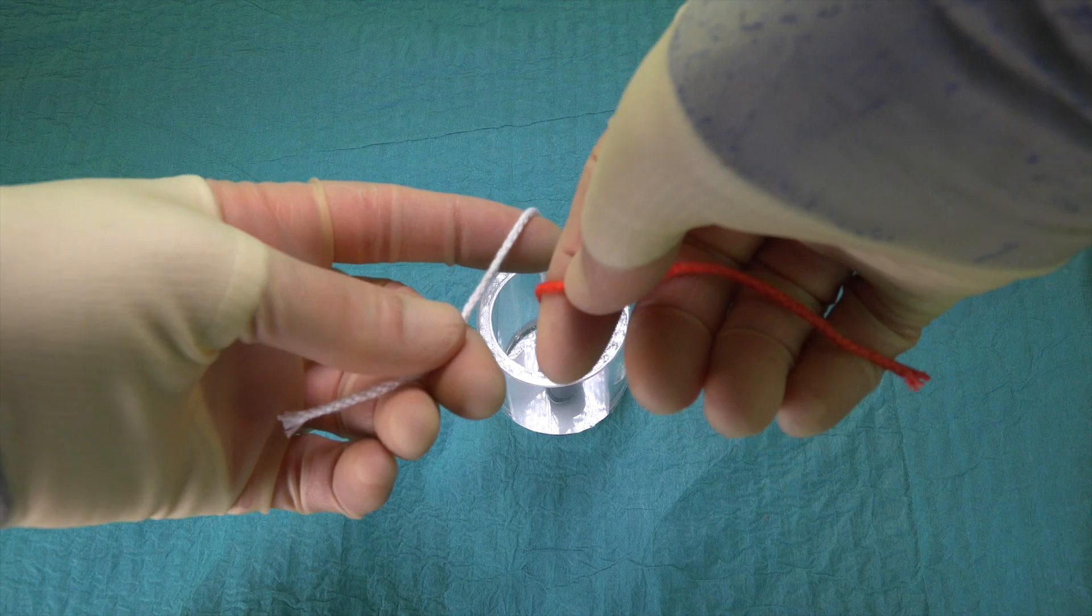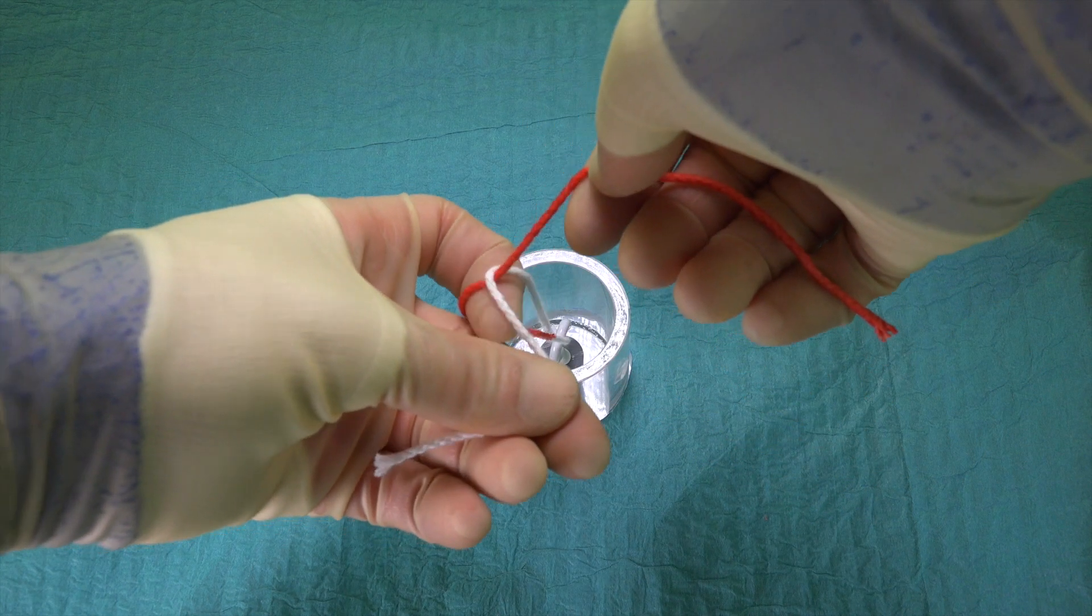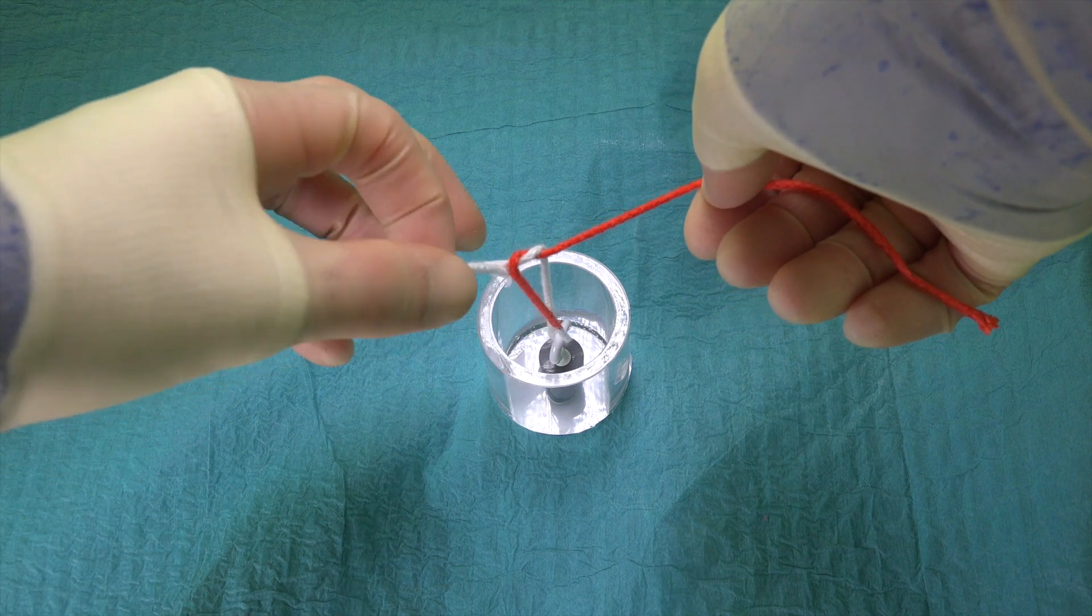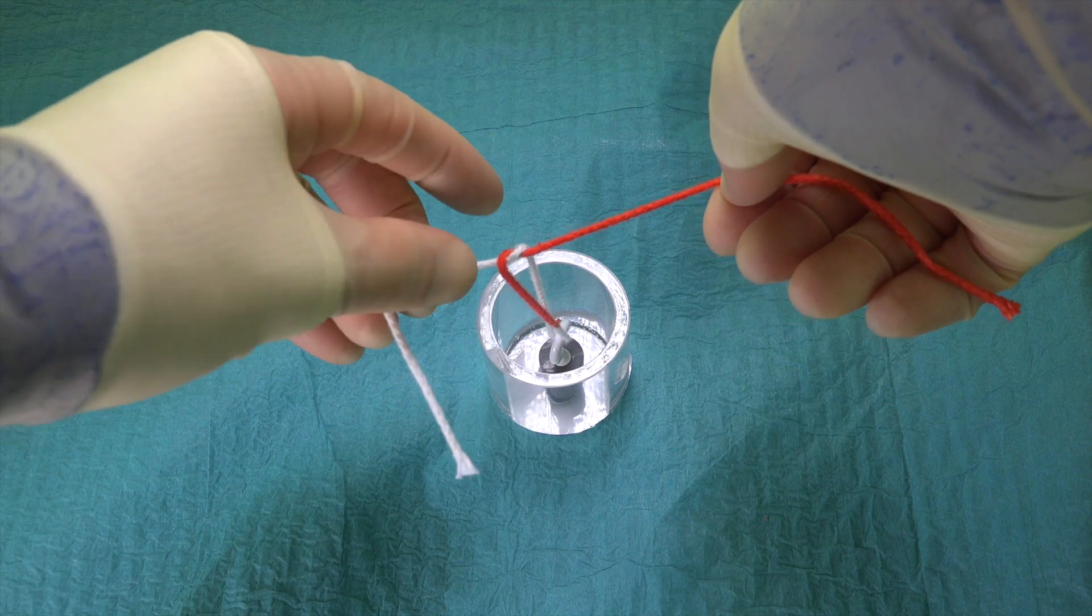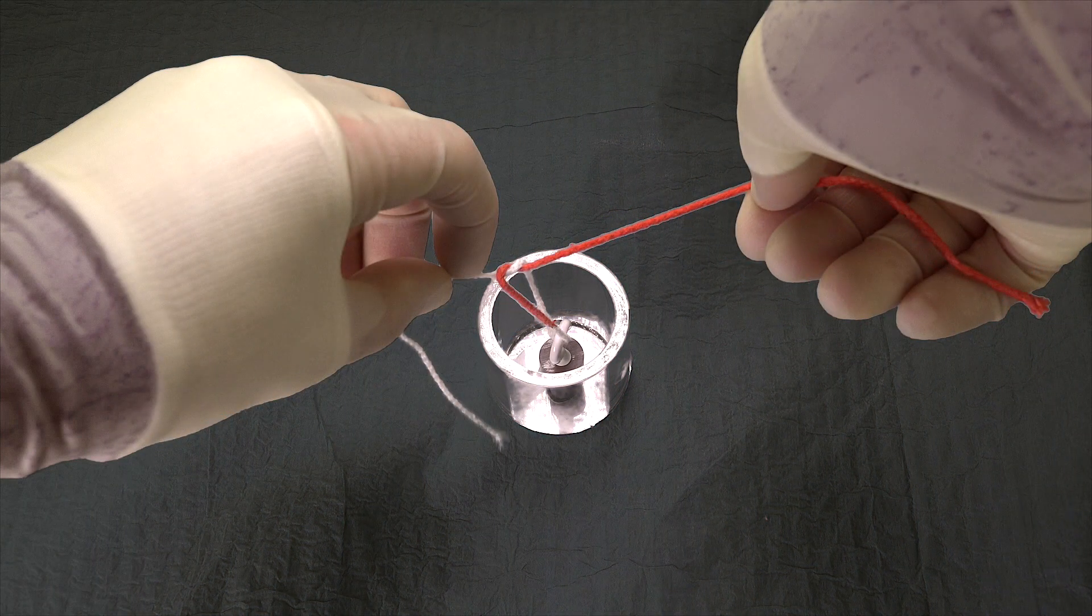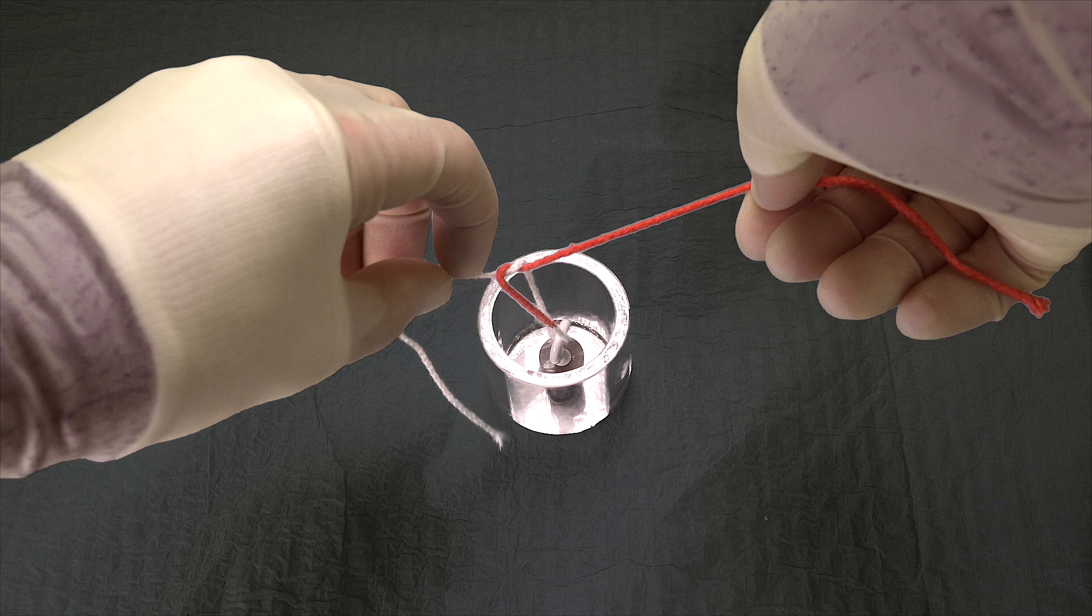We perform the first throw of the reef knot using the same movements as we would for a normal hand-tie. But, rather than the hands crossing at 180 degrees to lay the throw down, the right hand moves away from us slightly, but then maintains its position whilst pulling slightly upwards on the suture to maintain some gentle tension.